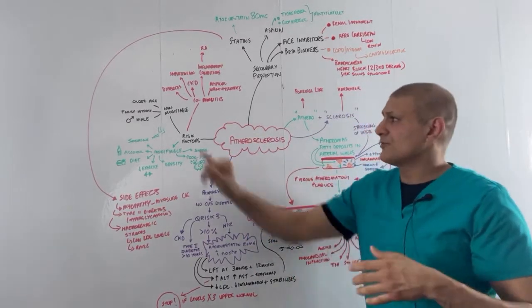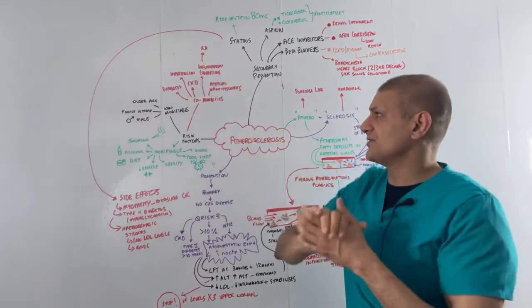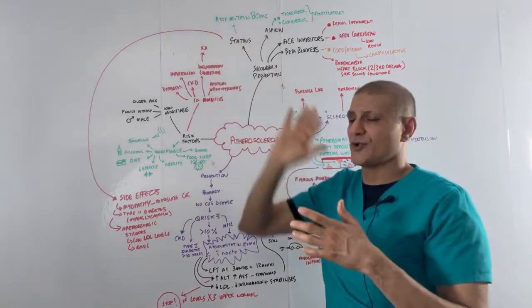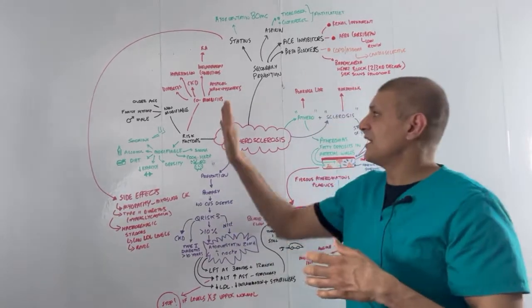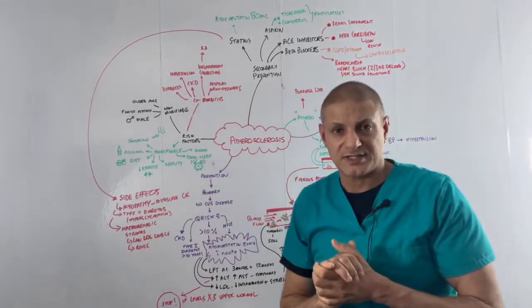Comorbidities we should be aware of: diabetes, hypertension, chronic kidney disease, inflammatory conditions such as rheumatoid arthritis, because remember in essence, it's a chronic inflammatory state, and atypical antipsychotics.